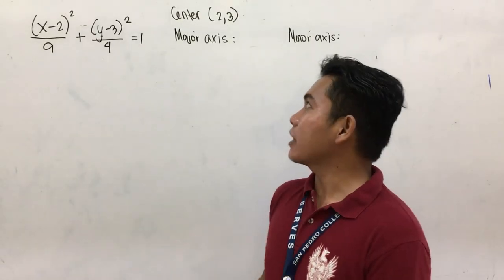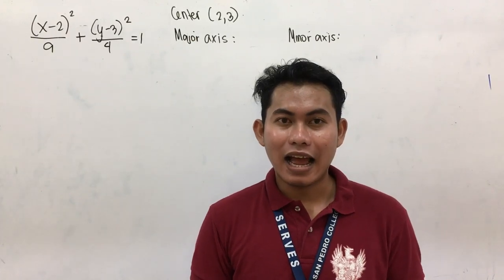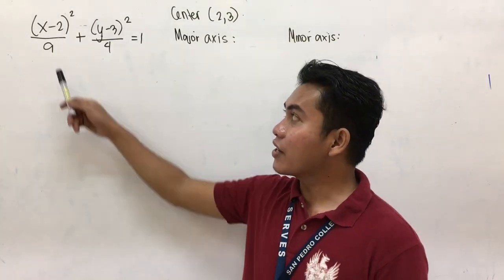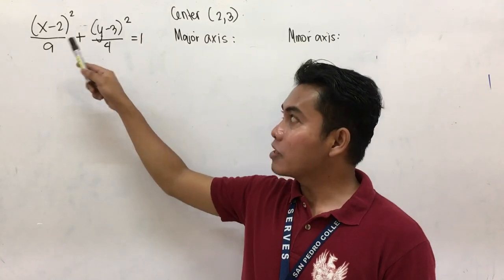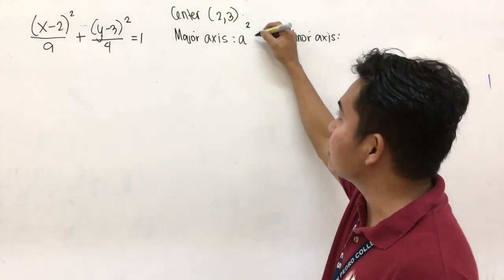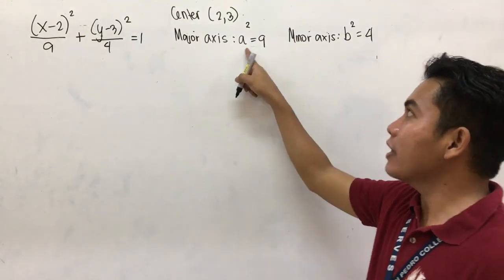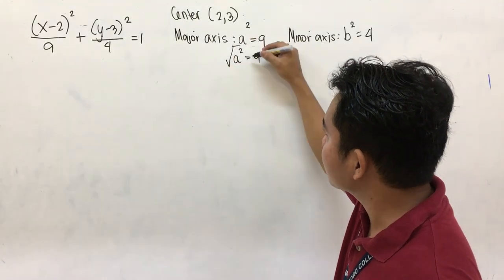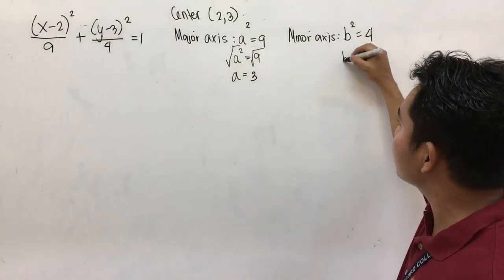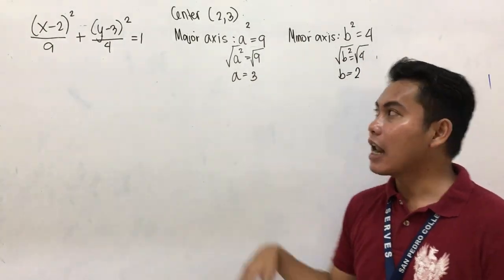To find our major axis, take note — which of the two has the larger denominator? We have here 9 and 4. Since 9 is larger than 4, our major axis has a squared equal to 9, and our minor axis has b squared equal to 4. To find a, extract the square root: a is 3. This is our major axis. And our minor axis: extract the square root, b is equal to 2.